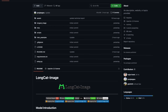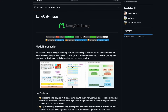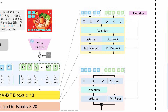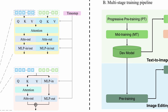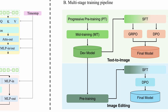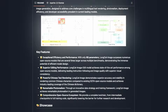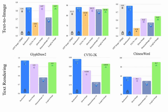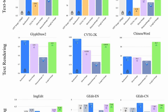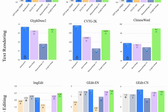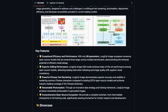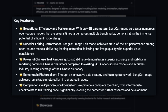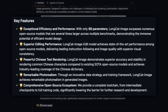So what exactly is Longcat Image? This is an open source foundation model for image generation designed to tackle some of the biggest challenges in current AI image models — things like multilingual text rendering, photo realism, deployment efficiency, and developer accessibility. With only 6 billion parameters, this model is outperforming a bunch of open source models that are several times larger across multiple benchmarks. That means you can run this locally without needing an insane hardware setup. And because it's bilingual, it handles both Chinese and English really well, which is especially important for Chinese text rendering — a pain point for most AI image generators.